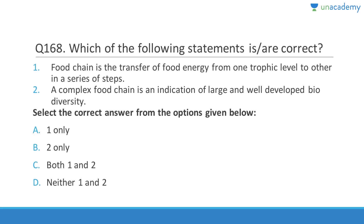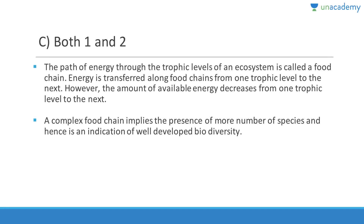Food chain is the transfer of food energy from one trophic level to another in a series of steps — correct. A complex food chain is an indication of large and well-developed biodiversity — also correct. Energy is transferred along food chains, but the amount of available energy always decreases — only 10% is passed on and 90% goes to waste at each trophic level. A complex food chain implies a very stable biodiversity.